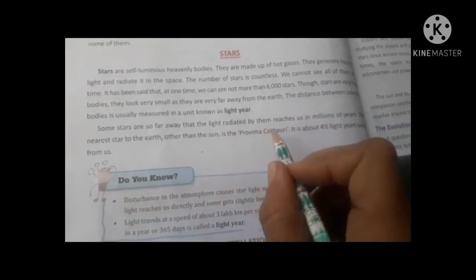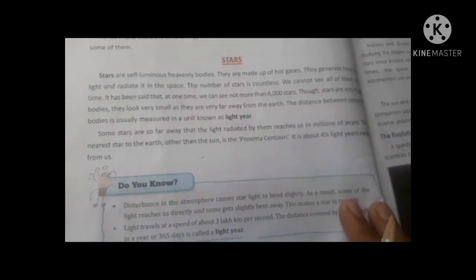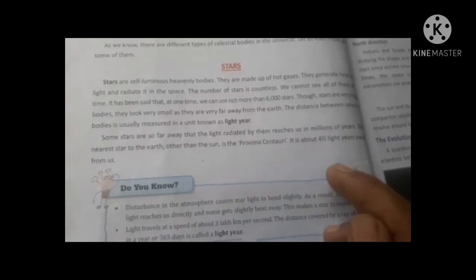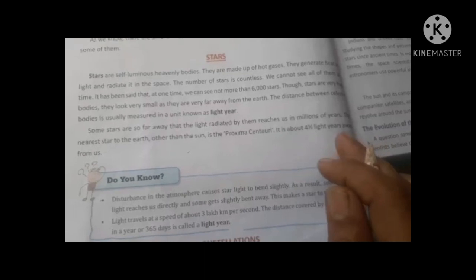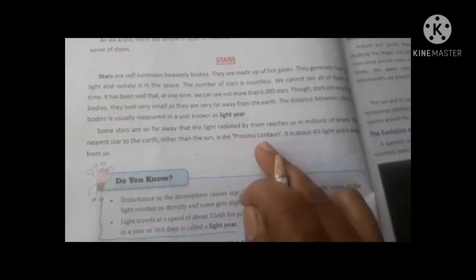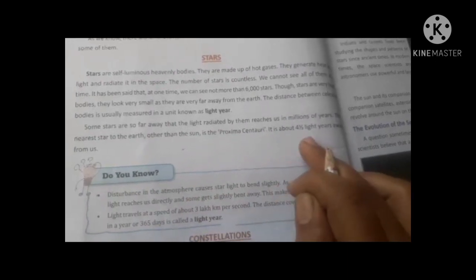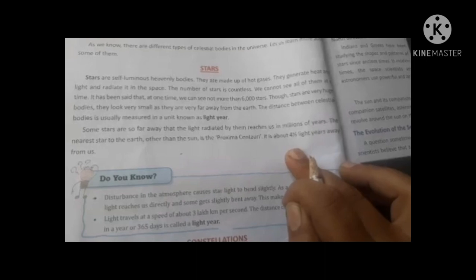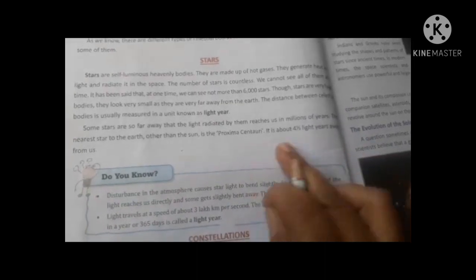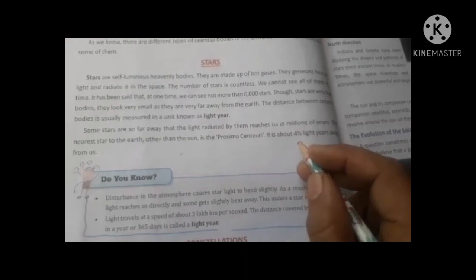All stars are far away. The light radiated by them takes millions of years to reach us. The nearest star to the Earth other than the Sun is Proxima Centauri. It is about four and a half light years away from us. The measurement of distance in light years is four and a half years.